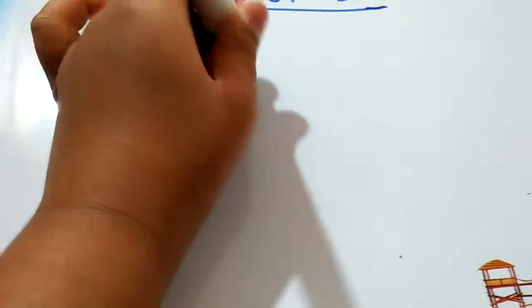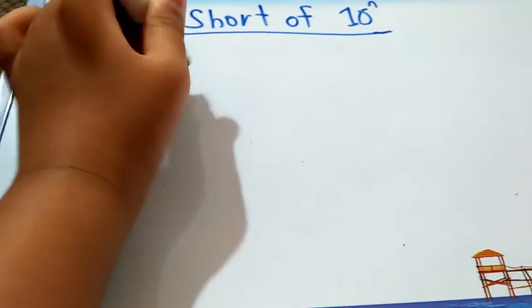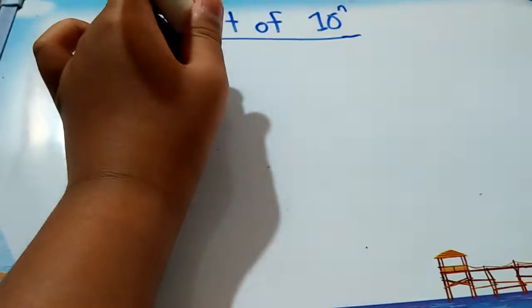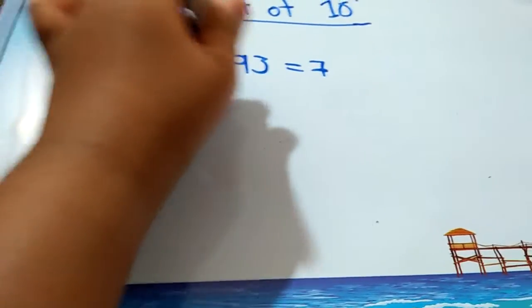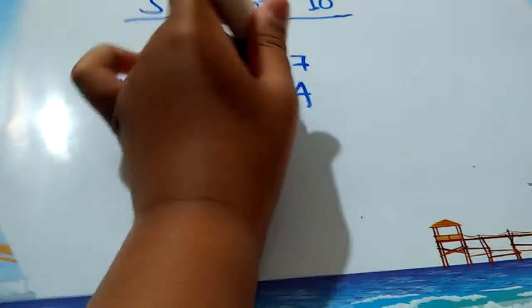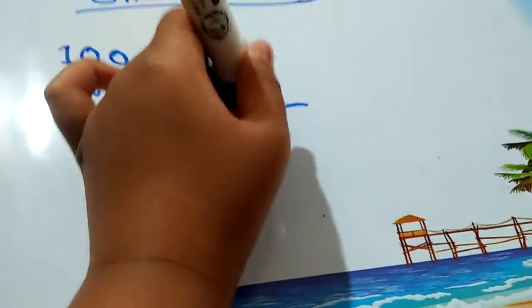Suppose you are doing 93 times 96. Here this is the short of 10 to the power of n. So 100 minus 93 is 7, and 100 minus 96 is 4. Multiply those and you get 28.